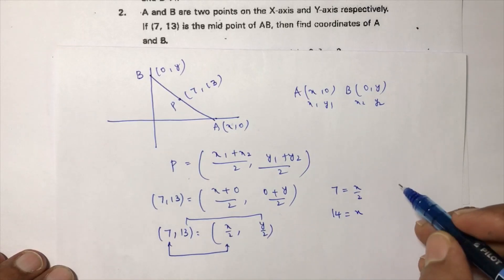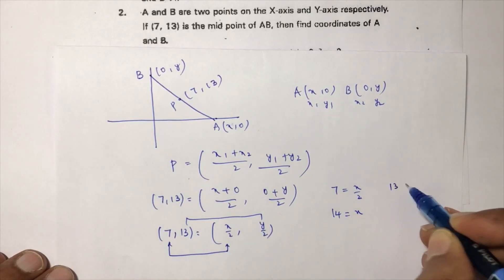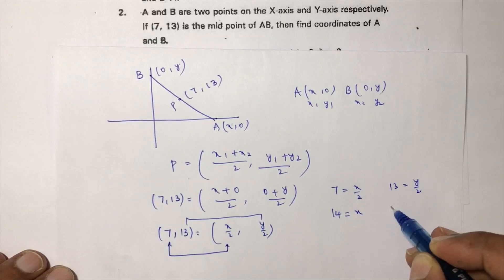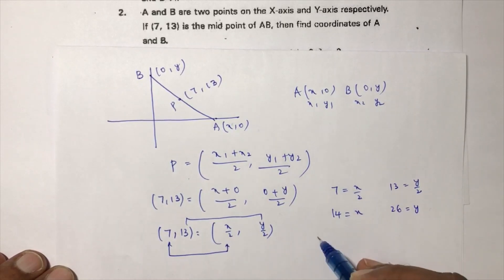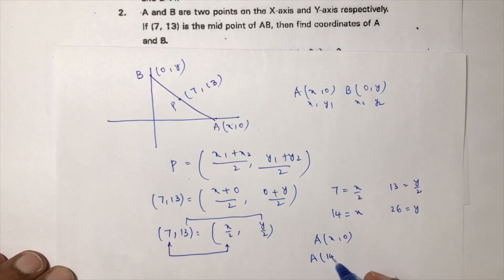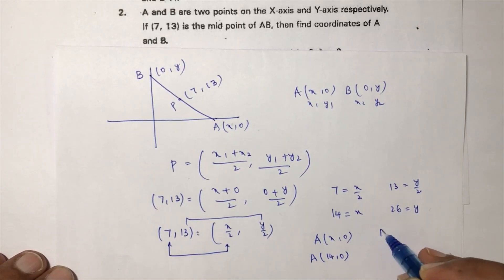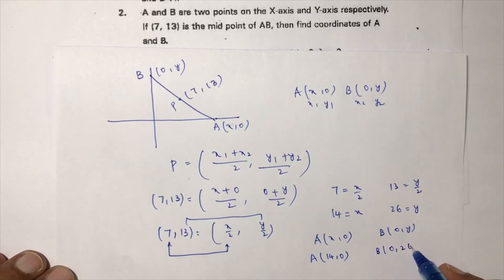And 13 = y/2, so 2 × 13 = 26 = y. Since A = (x, 0), point A is (14, 0). Since B = (0, y), point B is (0, 26).